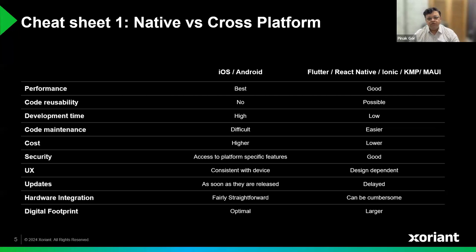In terms of security, native apps have an edge since you have direct access to platform-specific built-in security features. The look and feel for native apps is also more seamless and consistent, with inherent access to device OS interfaces. Native app developers get first-hand access to updated SDKs as soon as they are available, while cross-platform always has some delay catching up. For hardware integration like RFID or Bluetooth, native development is much easier as providing support for various OEMs becomes cumbersome with a cross-platform approach. Apps built using native technologies are also smaller in size compared to cross-platform, since cross-platform adds abstraction layers on top.